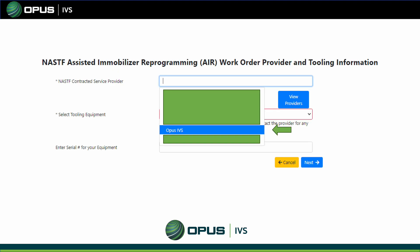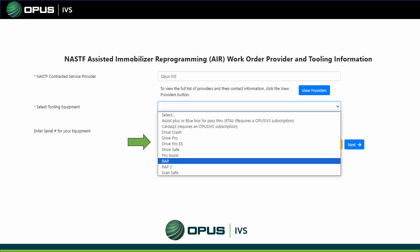Once you click Next, it will ask you to select a provider — click Opus IVS. Then it will ask you to select the tool you are using: if you're using a Drive Pro unit, select Drive Pro; if you're using one of our WRAP units, click WRAP. Once selected, it will ask you to enter your equipment's serial number.